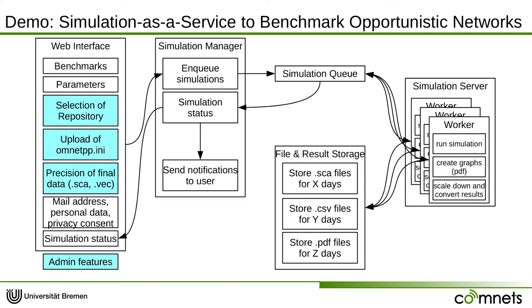Once the simulation is queued, the simulation servers — or more precisely the workers — start executing the simulation. The workers are special Docker containers running an instance of omnet++. The worker runs the simulation, creates resulting graphs, scales down, and converts the results to CSV files. After that, the reduced results and graphs are uploaded to our file and resource storage, and the user is notified where the results can be downloaded.